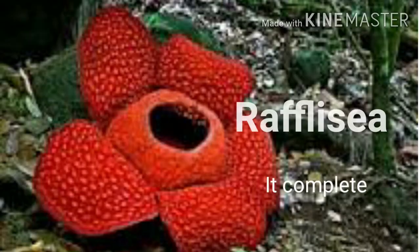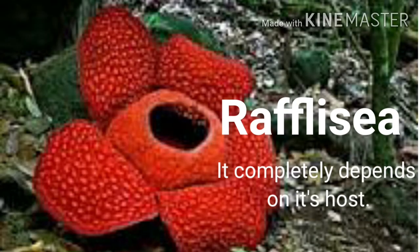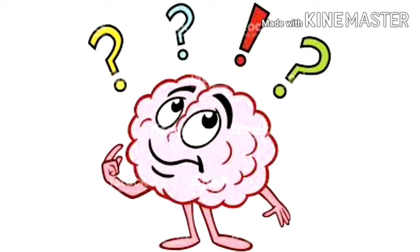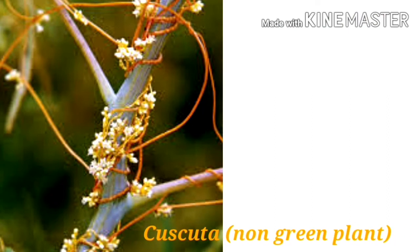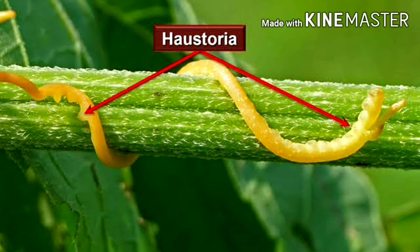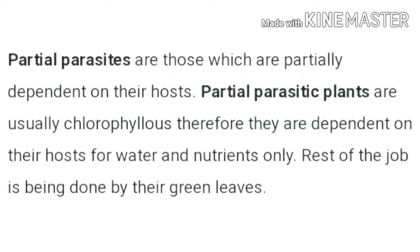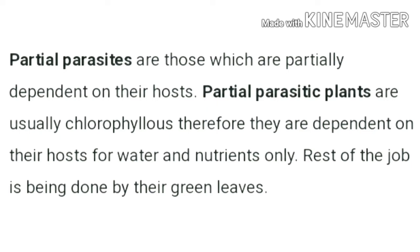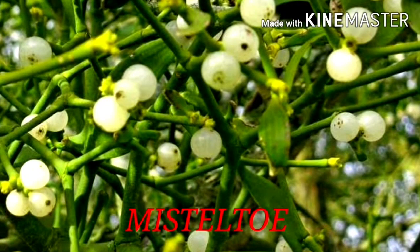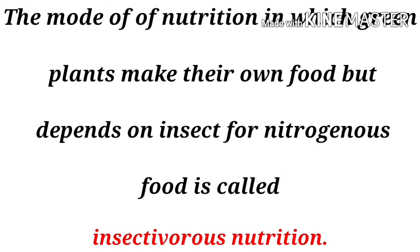Cuscuta is an example of a totally parasitic plant. The question arises: how do these plants get their food? They suck food from the host plant through their adventitious roots called haustoria. This means cuscuta is a total parasite.